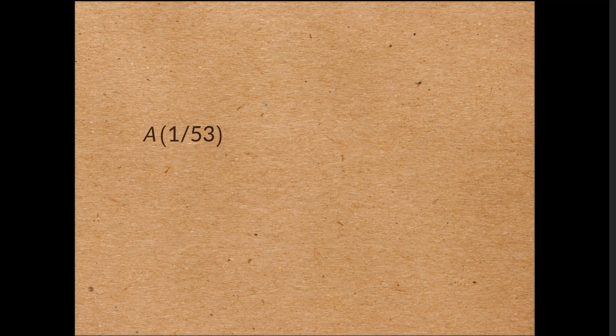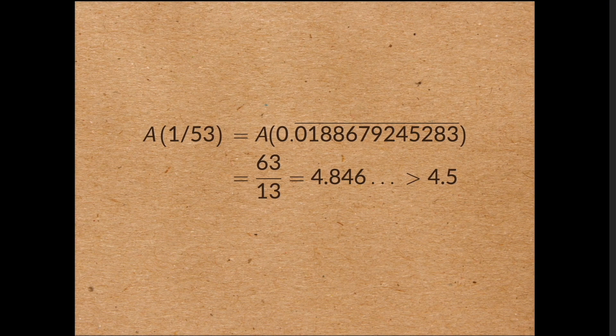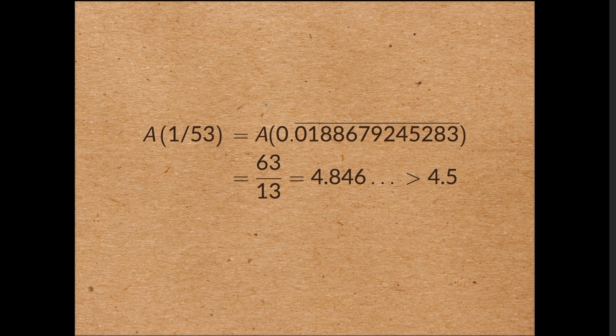If you take p to be 53, the average of the digits in the decimal expansion of 1 on 53 is just over 4.8. And in particular, it's bigger than 4.5. 53 is the smallest prime for which the average is bigger than 4.5.